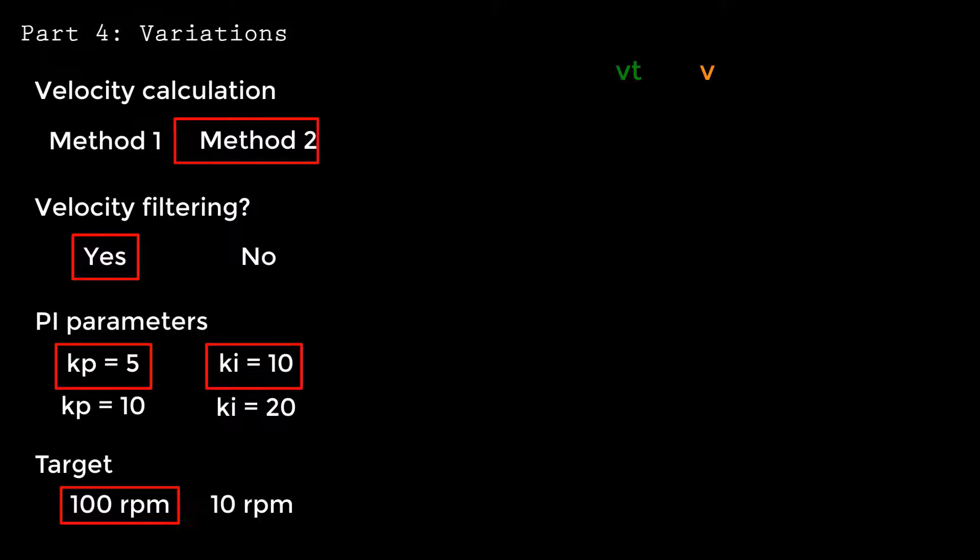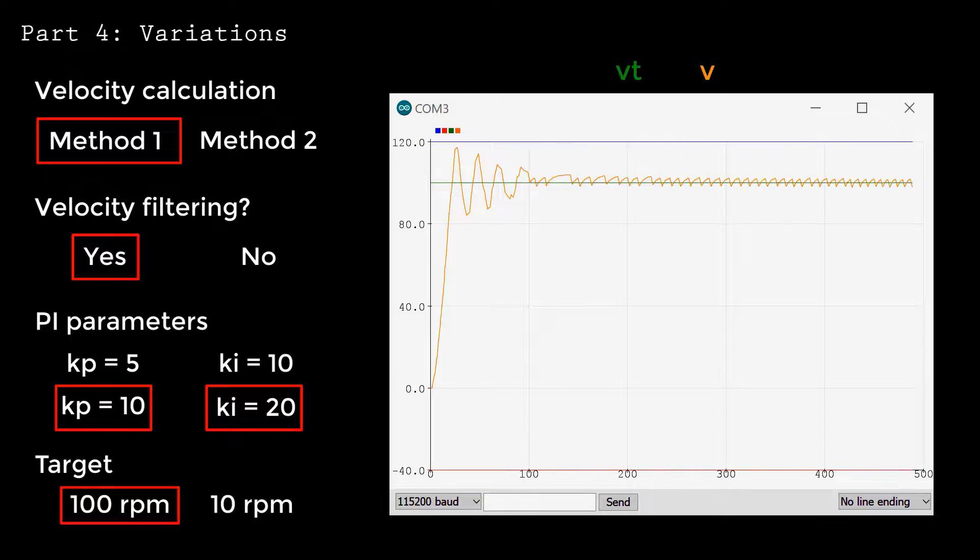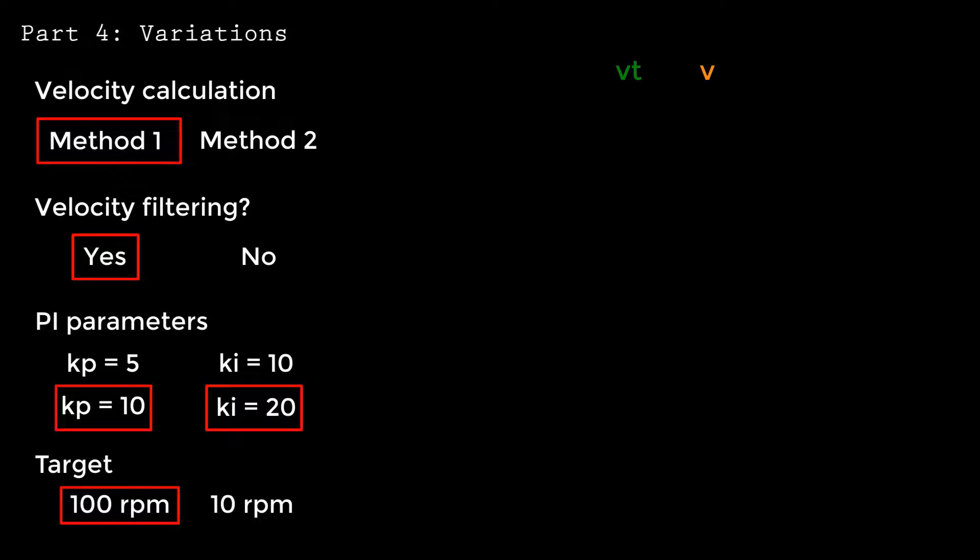What about doubling the control parameters to ensure a fast response? You can, and the response is still stable, but it hurts more than it helps, causing additional overshoot and a little jitter.